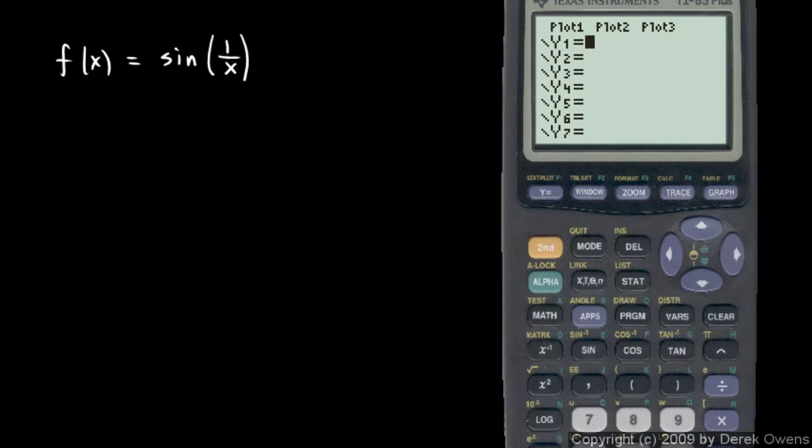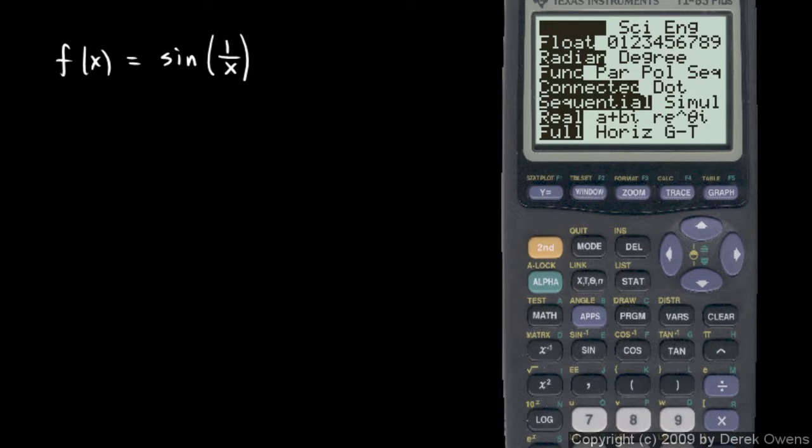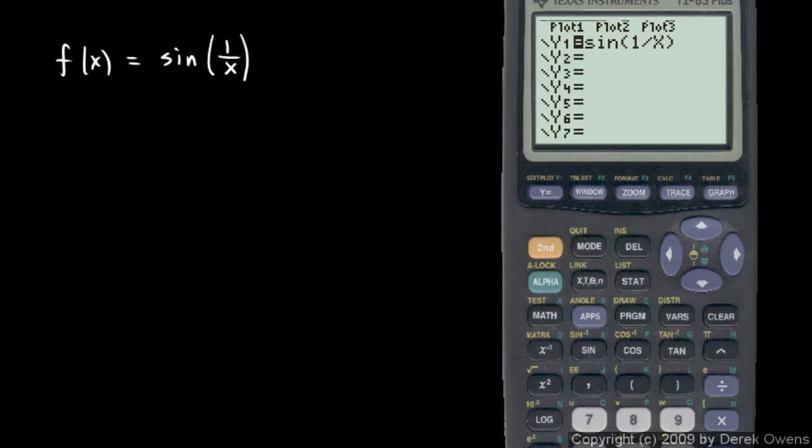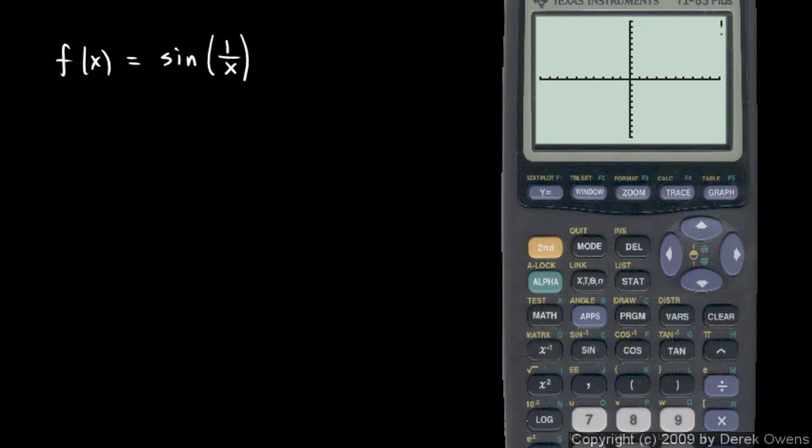For y1 here, I'll type in sine of 1 over x. This will work in either degree or radian mode; I'm in radian mode. If we graph this, we can't see much there.